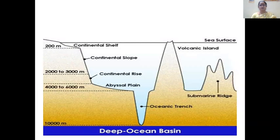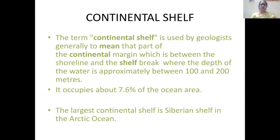The first topic is the continental shelf. The term continental shelf refers to the part of the continental margin between the shoreline and the shelf break, where the depth of the water is approximately 100 to 200 meters. This continental shelf occupies about 7.6 percent of the ocean area. The largest continental shelf in the world is the Siberian Shelf, located near the Arctic Ocean.